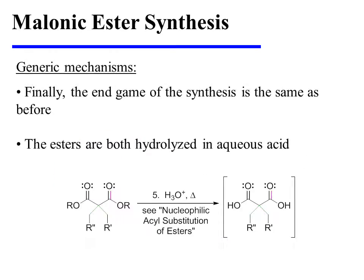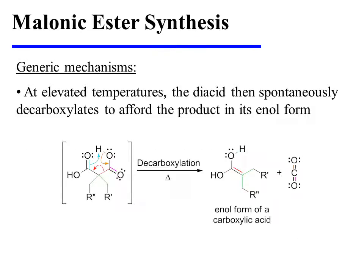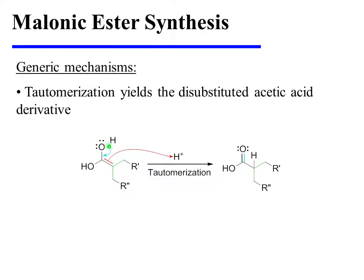Finally, the end game of the synthesis is the same as before. The esters are both hydrolyzed in aqueous acid, and at elevated temperatures the diacid spontaneously decarboxylates, releasing carbon dioxide and affording the product in its enol form. Spontaneous tautomerization then yields the disubstituted acetic acid derivative.